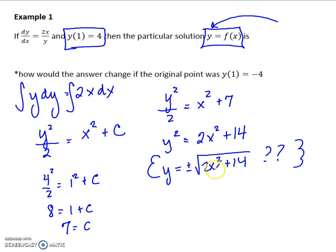If I plug in a 1 here, will I get out 4 if it's positive or 4 if it's negative? If I plug in a 1, I get 1 squared, which is 1, times 2, which is 2, plus 14 is root 16. And the square root of 16 is positive 4. So I want it to stay positive. So for this one, I'm going to have y equals positive root 2x squared plus 14. This will give me a positive 4 out.